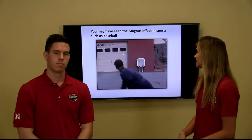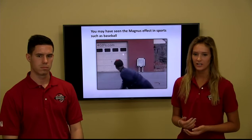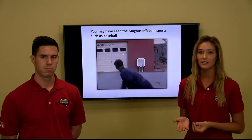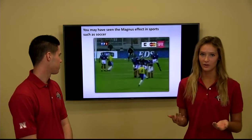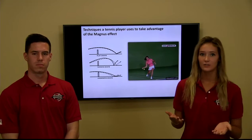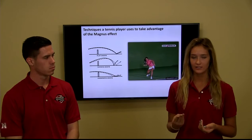You may have seen the Magnus effect in sports such as baseball, where a pitcher throws a curveball to make the batter strike out. Similarly, a ping pong player puts curve on the ball to make their shot harder to return, and in soccer a player puts spin on the ball to bend it around a wall of players and score a goal. A more specific example is techniques a tennis player uses to leverage the Magnus effect.